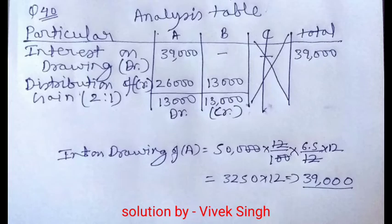39,000 is the interest on drawing of A. The interest on drawing is already calculated below the analysis table. The monthly drawing is 50,000, so 50,000 into 12 upon 100 into 6.5 upon 12. This is the formula to calculate interest on drawing. So the interest on drawing is calculated 39,000 of A. We have to make this entry in analysis table. Interest on drawing at the rate 39,000 is shown on A's column and the total is 39,000.